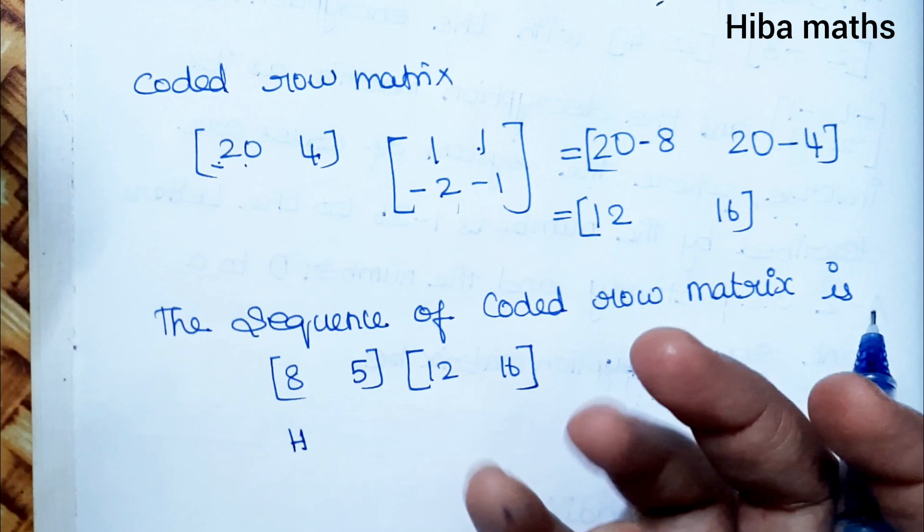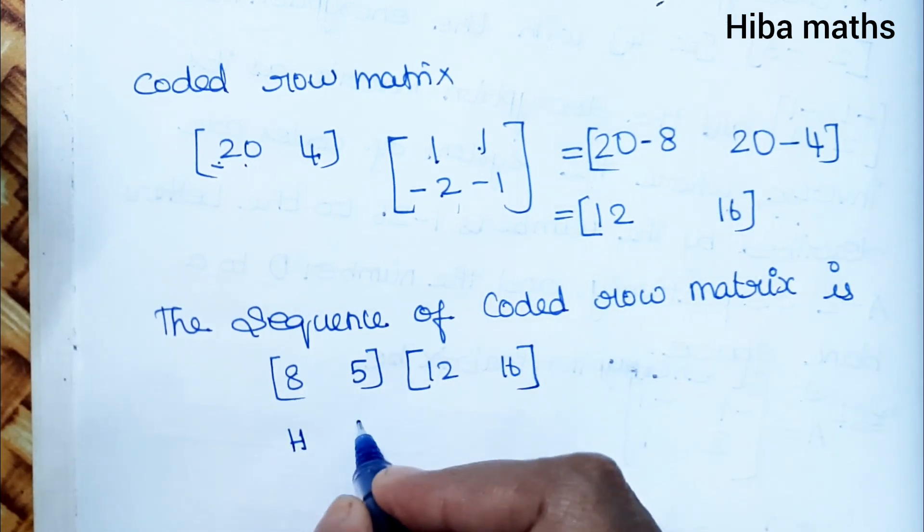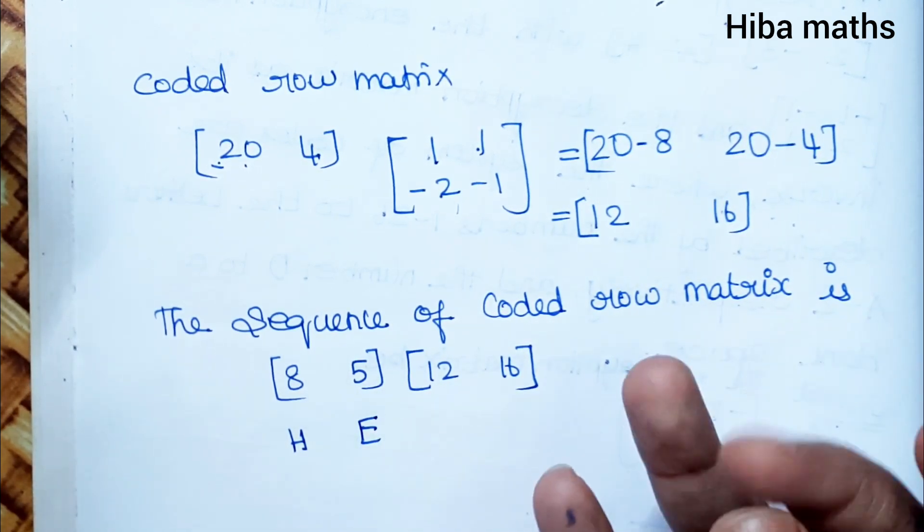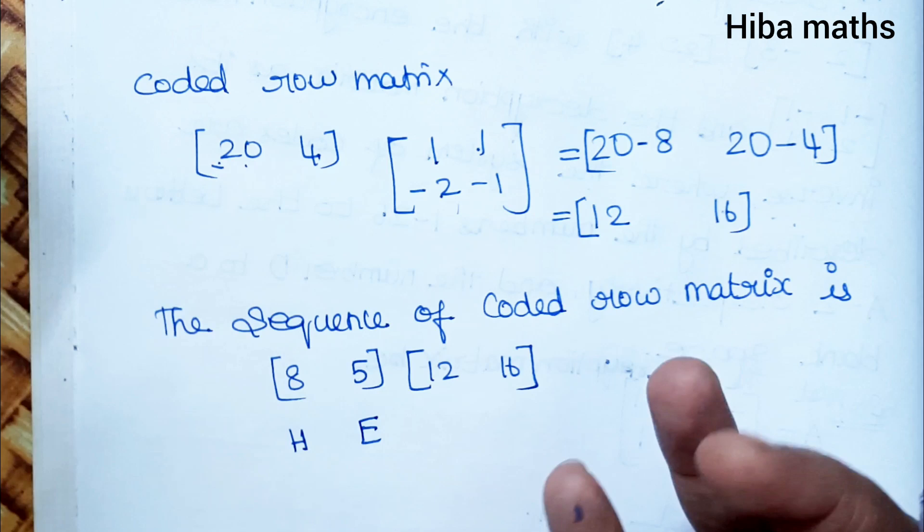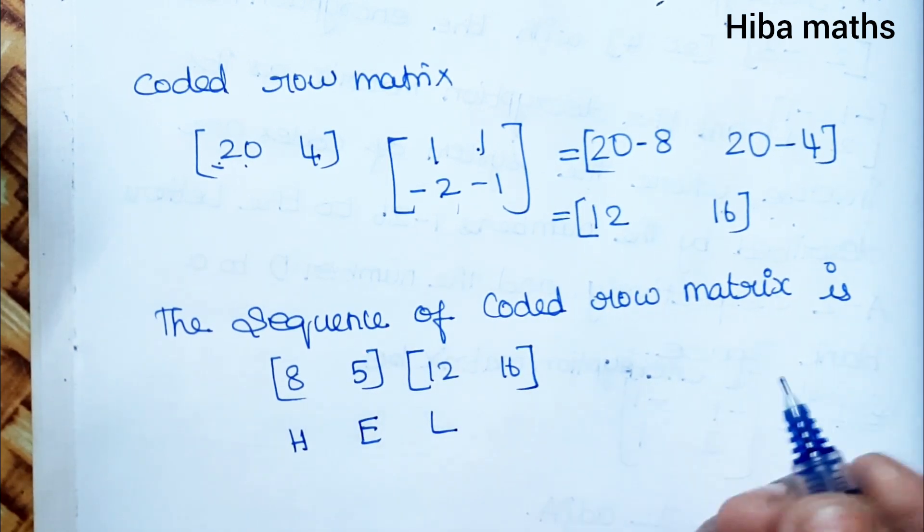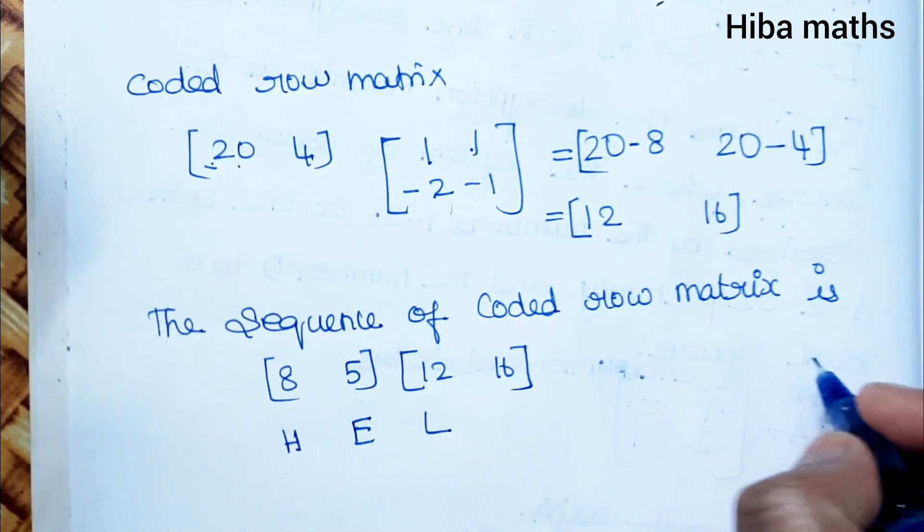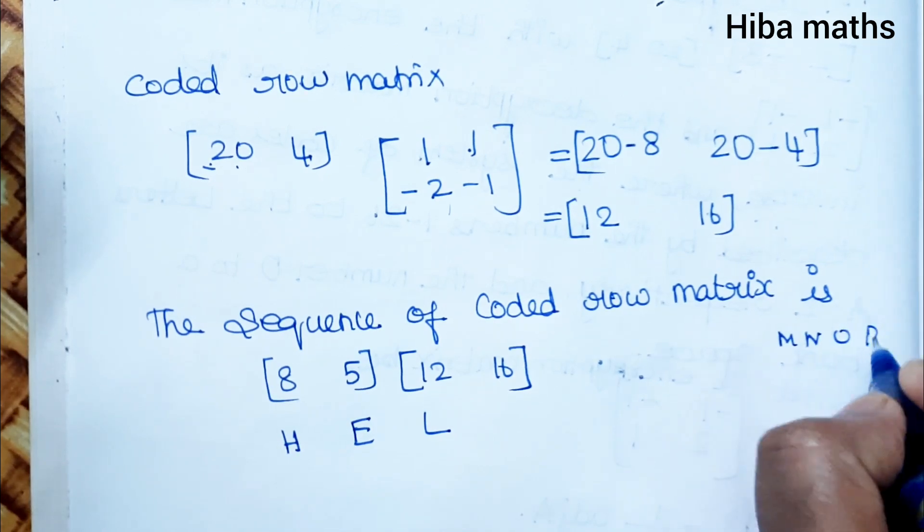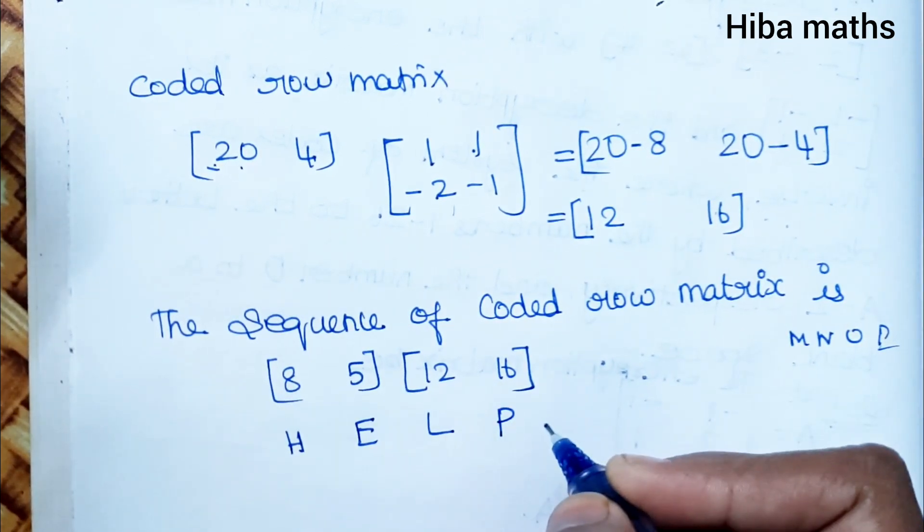The 8th element is H (A, B, C, D, E, F, G, H), the 5th element is E. The 12th letter is L (A through L), and the 16th is P (M, N, O, P). So the message spells HELP.